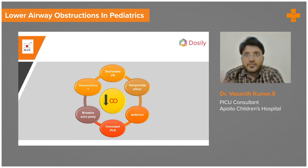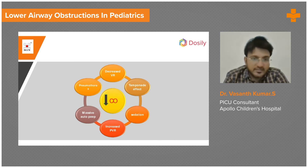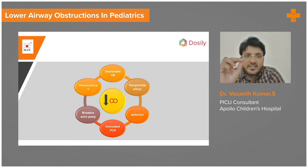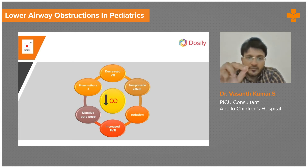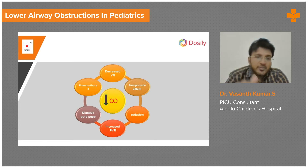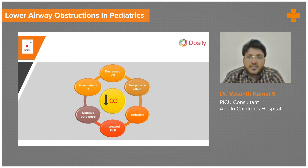Morphine should not be given. Ketamine is preferred for sedation because it causes bronchodilatation, which helps in asthma. Always paralyze the patient. Use the largest size ET tube. You can preload such patients with fluid because of the possibility of hypotension which develops during intubation.